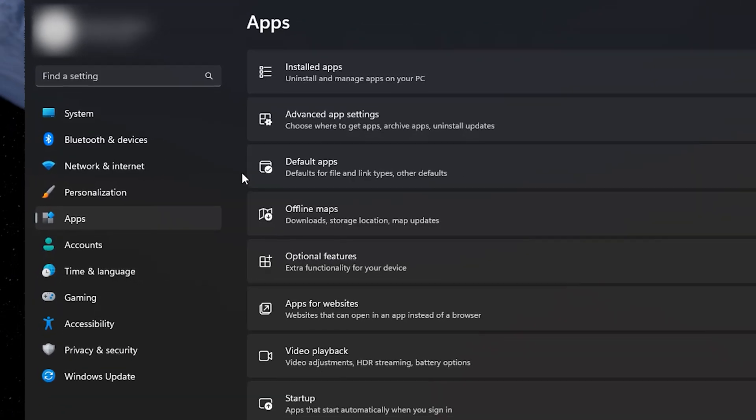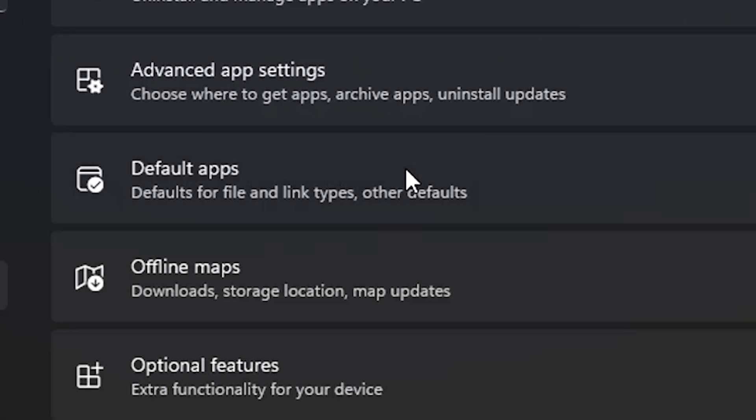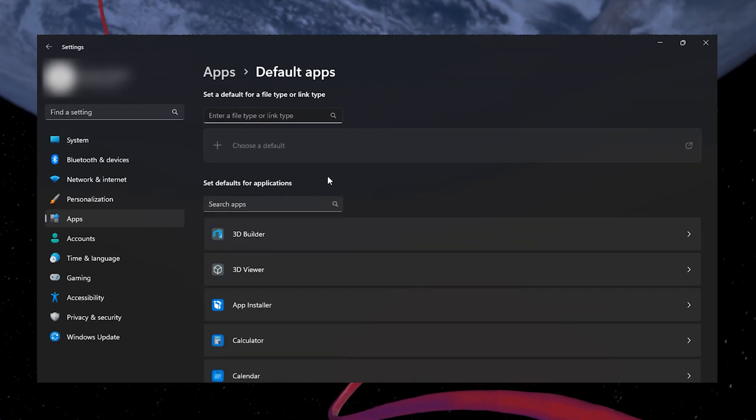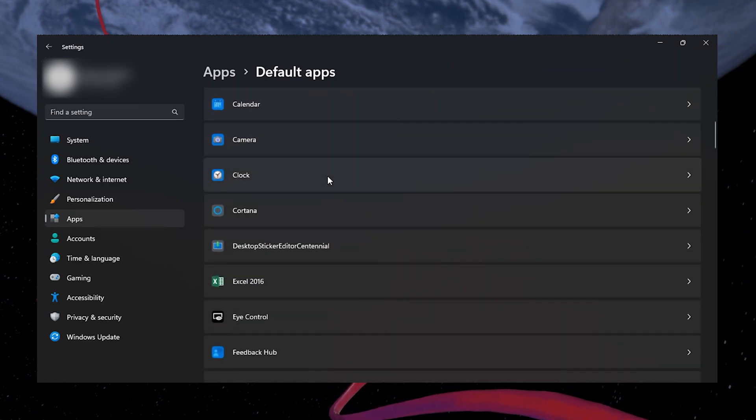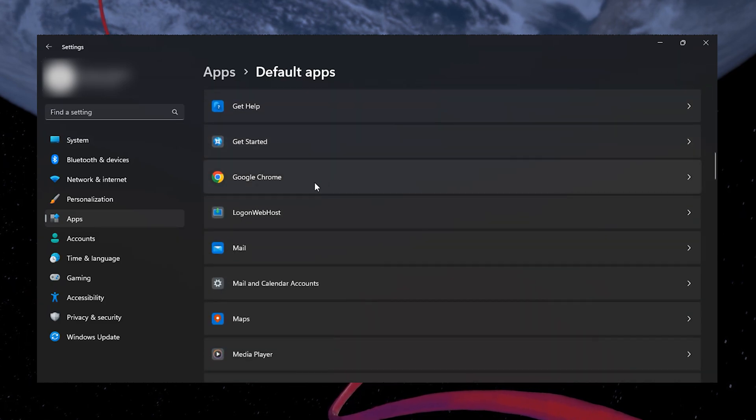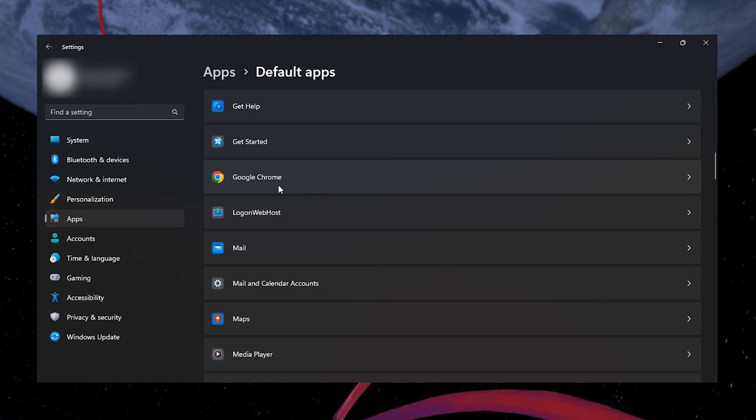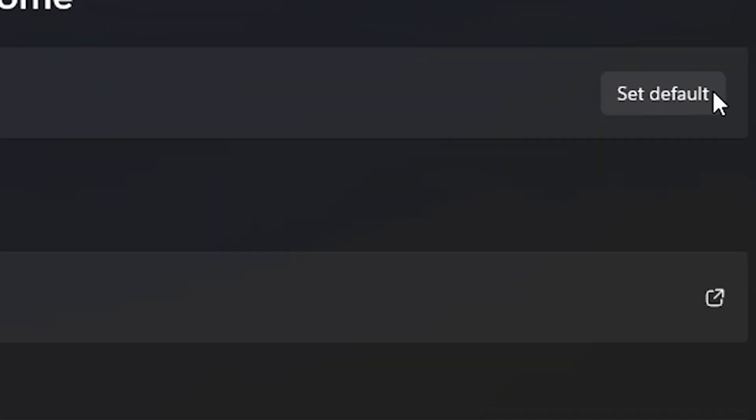Here, click on Default Apps. Once clicked, it will navigate you to the default apps on your system. Now scroll down to locate your browser of choice. In my case, it's Google Chrome. Once you find it, click on it and select Set Default.